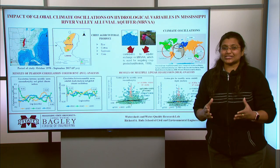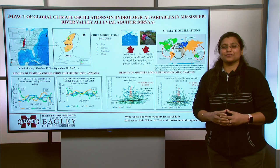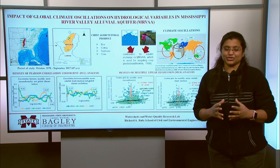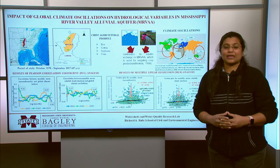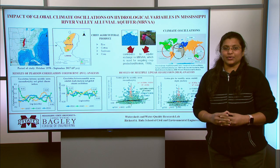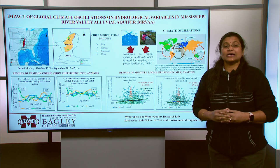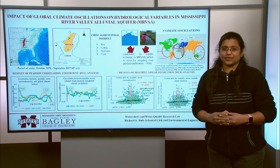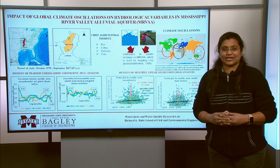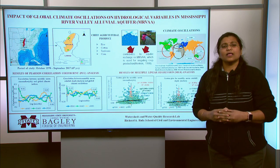Well, if your day starts with a bowl of frosted cornflakes, then my research could give you a takeaway. The Mississippi River Valley Alluvial Aquifer is underlying the lower Mississippi River Basin and is located in the southern region of the United States.